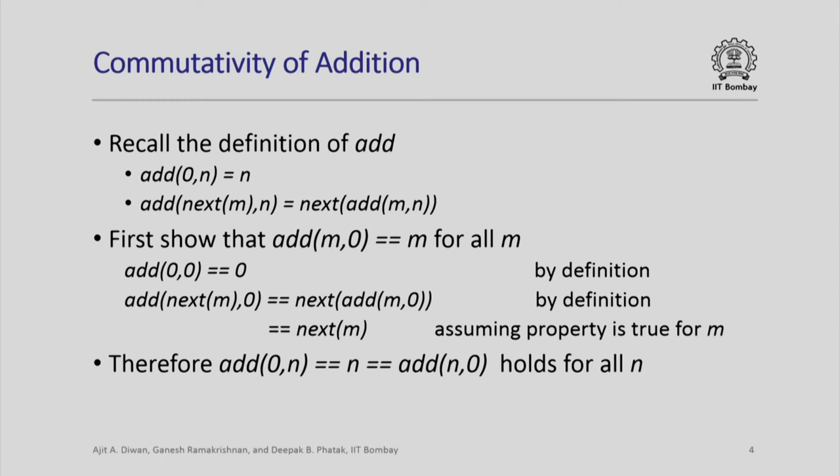We will first show that add(m, 0) = m for all m. Note that our definition only says add(0, n) = n for all n. We have not defined that add(m, 0) = m, but we can formally prove it. add(0, 0) = 0 by the first definition. And add(next(m), 0) by the second definition equals next(add(m, 0)). Assuming the property holds for m — that is add(m, 0) = m — we get add(next(m), 0) = next(m). Therefore add(m, 0) = m for all m.